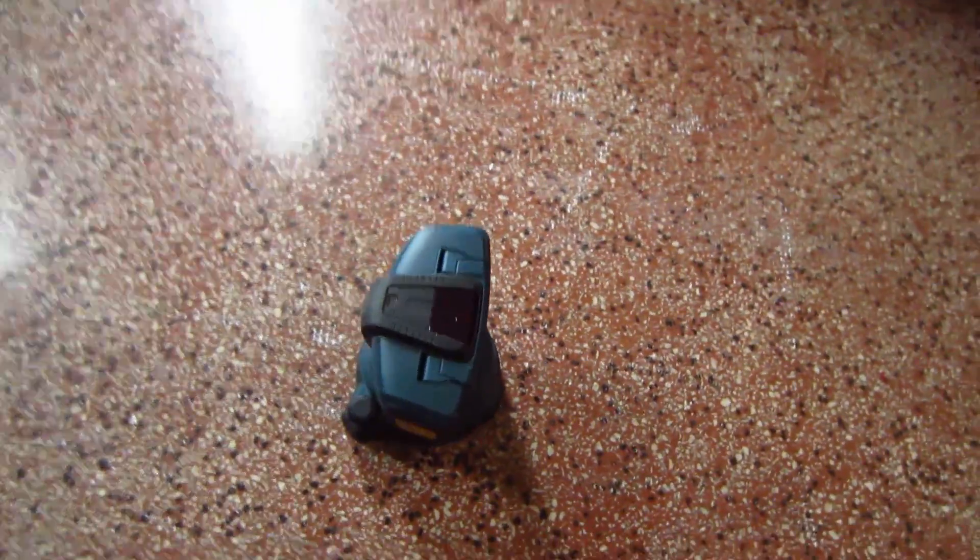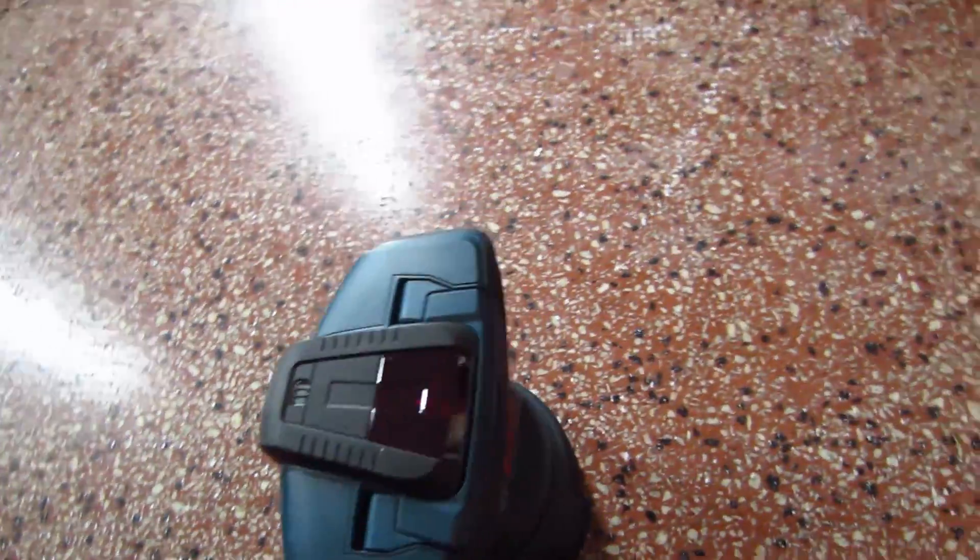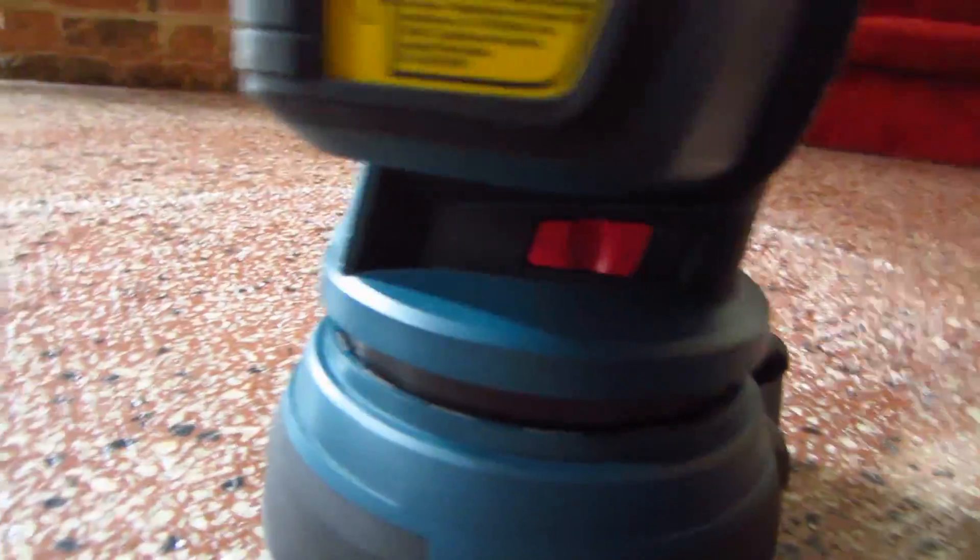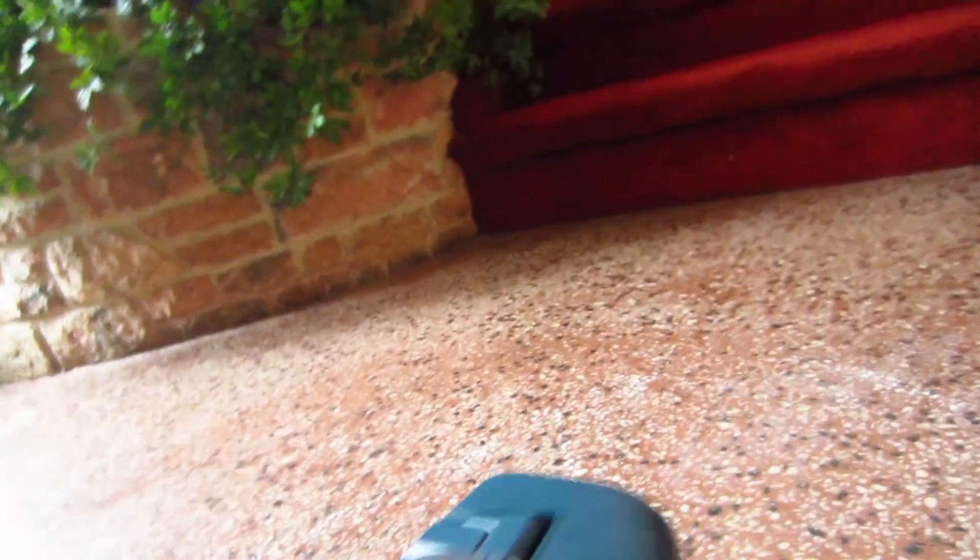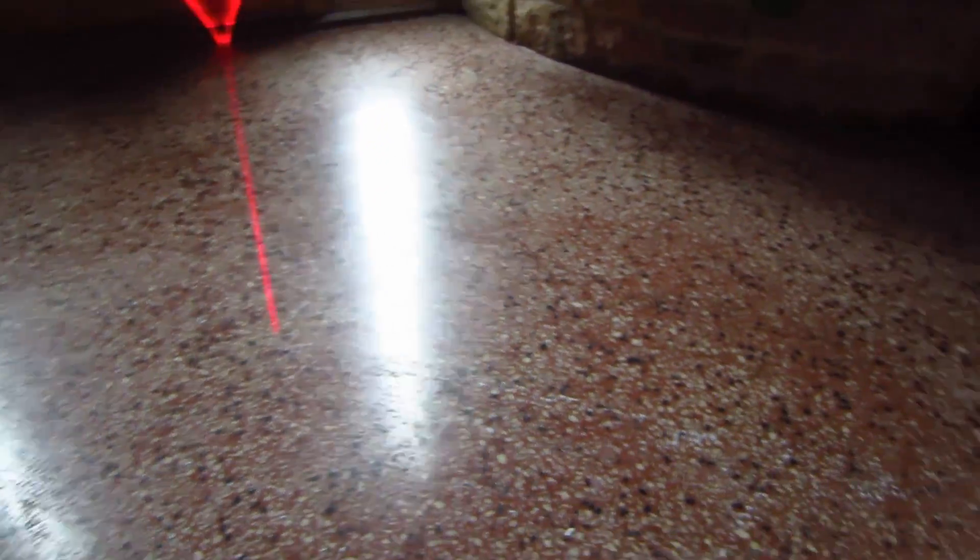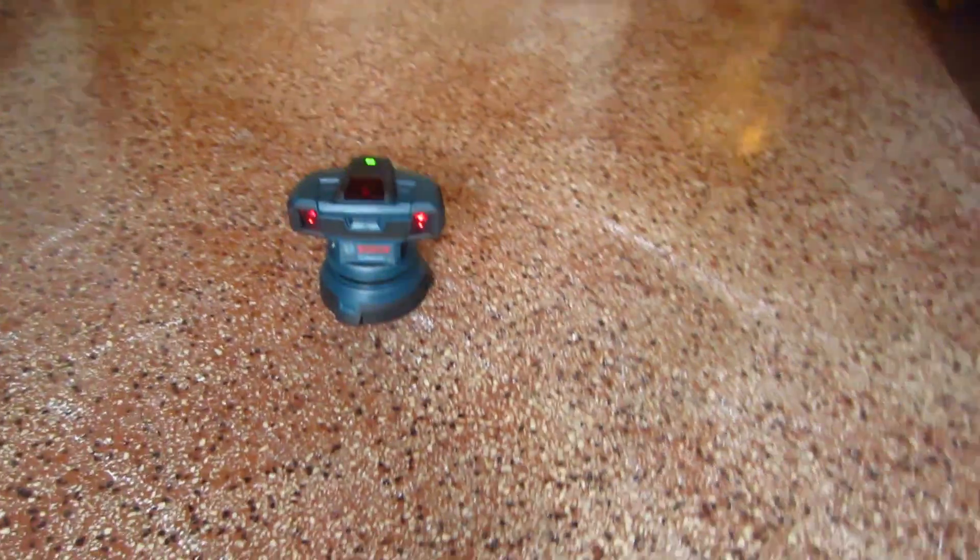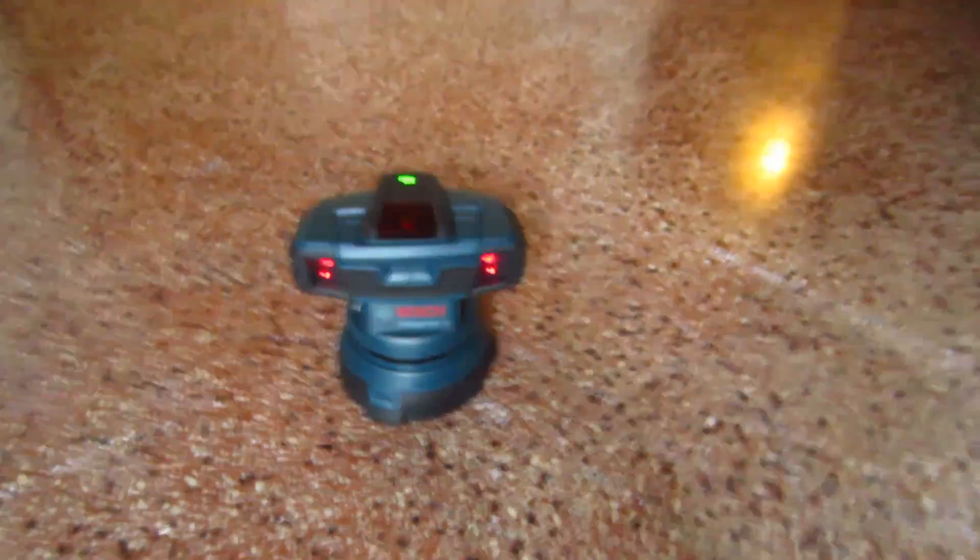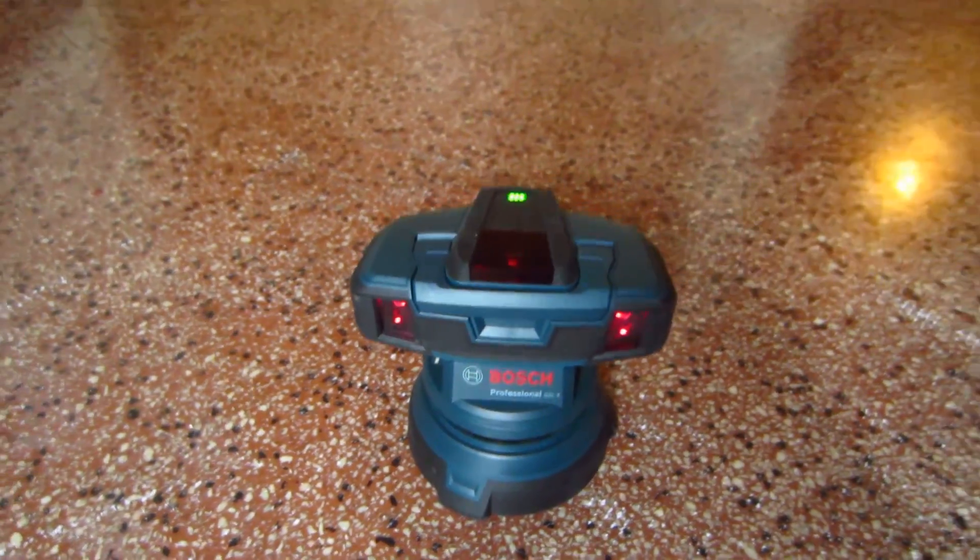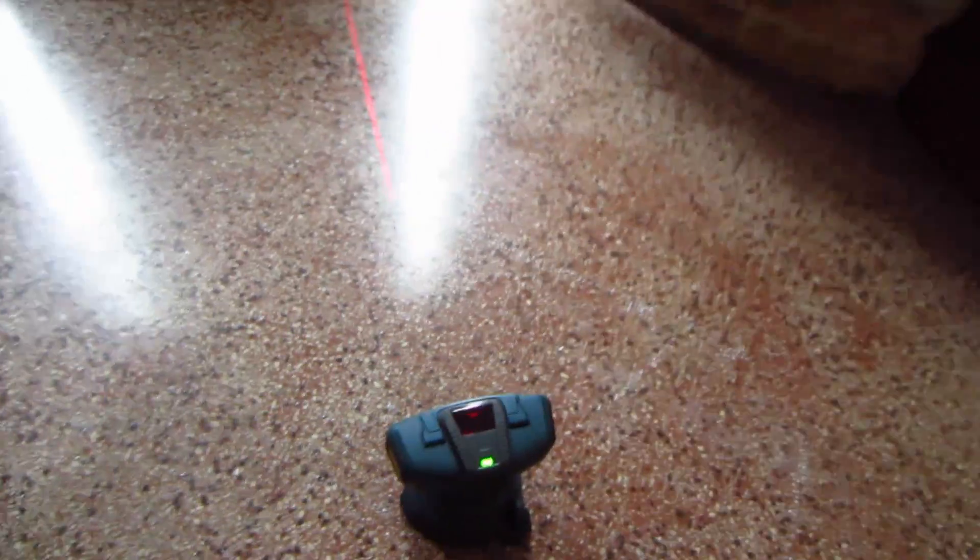So to turn it on, first of all it's self leveling. And to turn it on, you switch to here. And what it does, it throws out two beams. Two beams from the front. One here and one here. So you put it on a surface and you let it level itself out. Okay, so it throws out two beams.